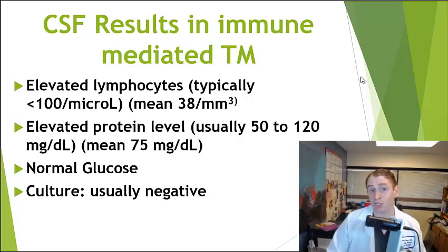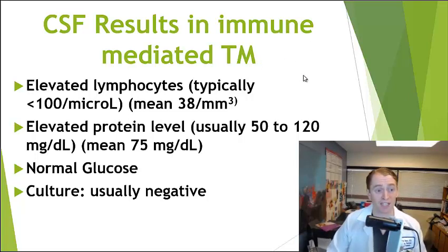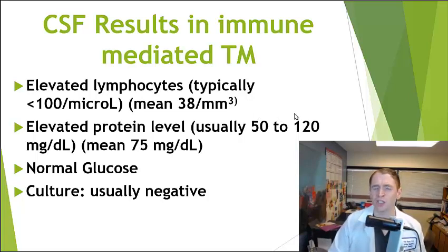Often we have to do a spinal tap to figure out the cause. In immune-mediated transverse myelitis — including multiple sclerosis, post-infectious, or post-vaccination cases — there is typically an elevation of lymphocytes, a subclass of white blood cells. Normally fewer than 5 per microliter, the average in immune-mediated transverse myelitis was 38 per microliter in one study. In multiple sclerosis it's usually a little lower, around 5 to 15.